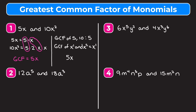Example 2: 12a to the fifth and 18a to the third. We start by writing out each monomial as a product of prime factors. 12 can be written as 2 times 2 times 3. If you're having trouble writing out prime factors, feel free to use a factor tree. Then a to the fifth is a multiplied by itself five times.